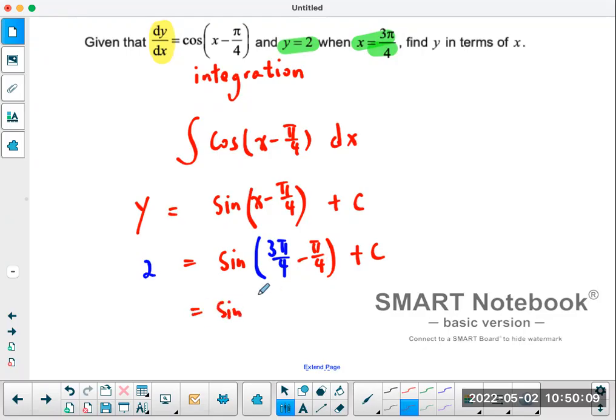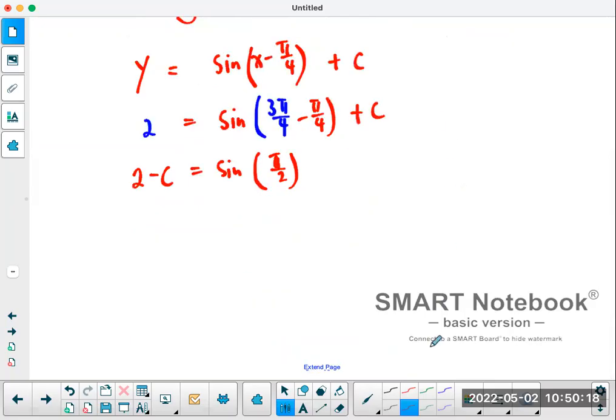π over 2, right, 2π over 4 which is π over 2. I'm going to bring the C to the other side. Now what is sine π over 2? It's a paper one, so I can't use my calculator, so I have to remember what my graph looks like.